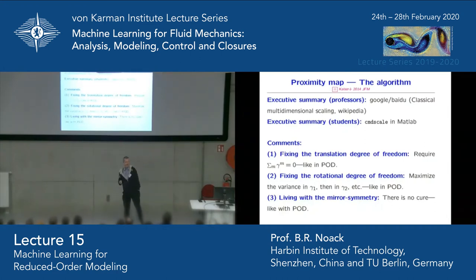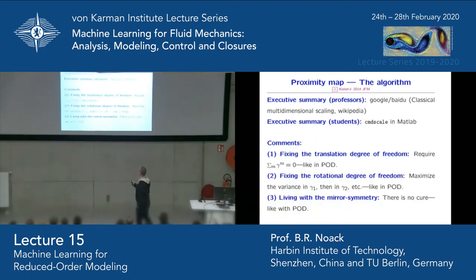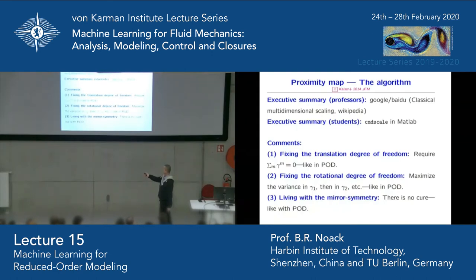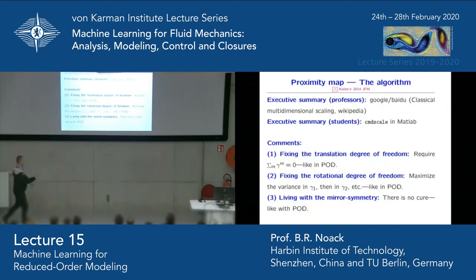The executive summary for professors: look in Wikipedia; for students, apply CMD scaling in MATLAB. There are several degrees of freedom: you can move the points in the feature space — you center them so the average is zero. There is also a rotational degree of freedom: you make sure, like in POD, that the largest fluctuation happens in gamma_1, then gamma_2, and so on. You also have to live with mirror symmetry — you can reflect the configuration around some axis, so gamma_1 could be positive or negative with no way to fix that, again like with POD.